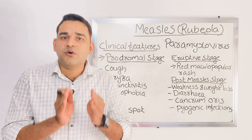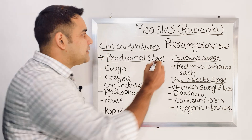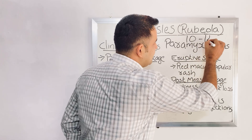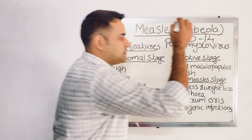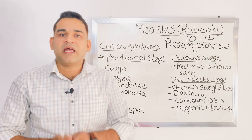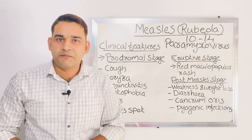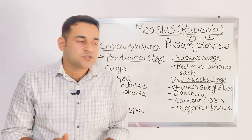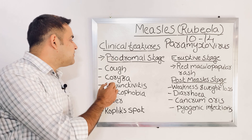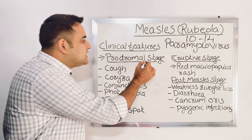The incubation period of measles is between 10 to 14 days. The clinical features of measles are mainly divided into three stages: prodromal stage, eruptive stage, and post-measles stage.